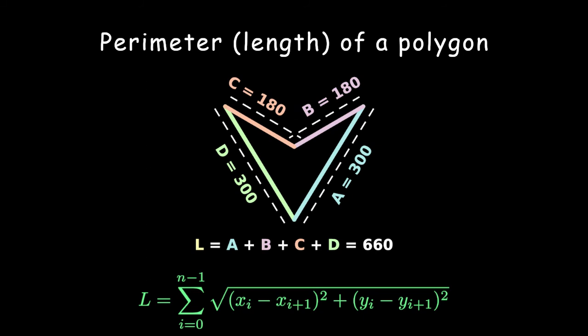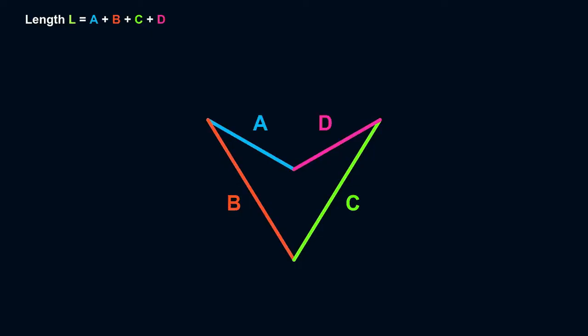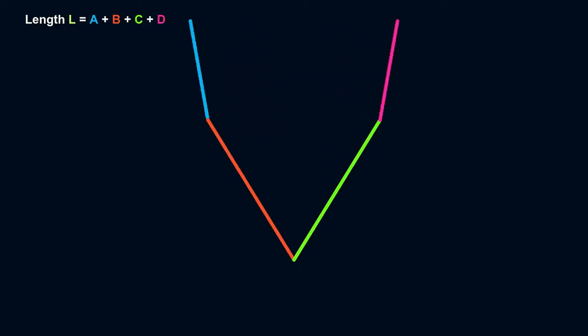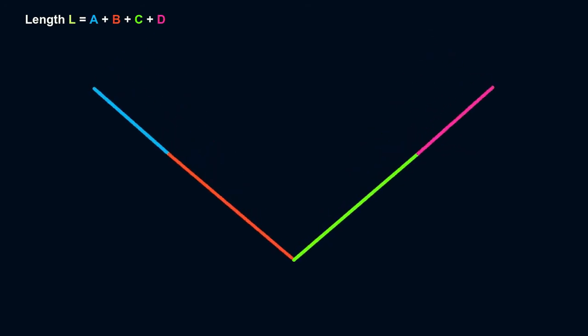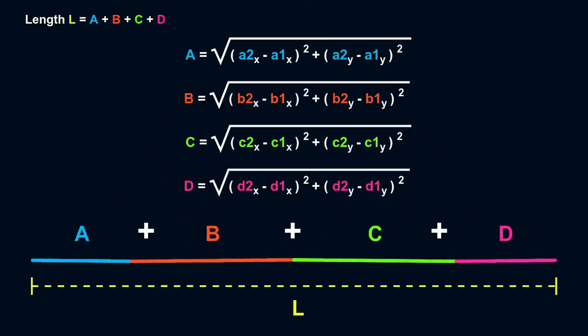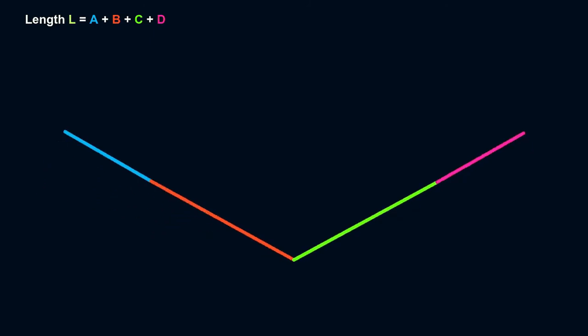The perimeter or length of a polygon is the sum of the longitude of its sides. Imagine a polygon with four sides: A, B, C, and D. Align A, B, C, and D to form a straight line. The length of this line is the length of the polygon.